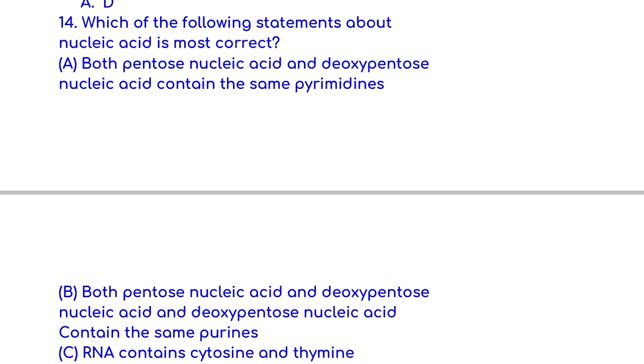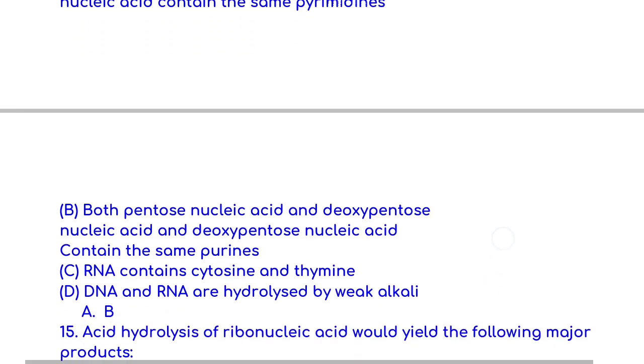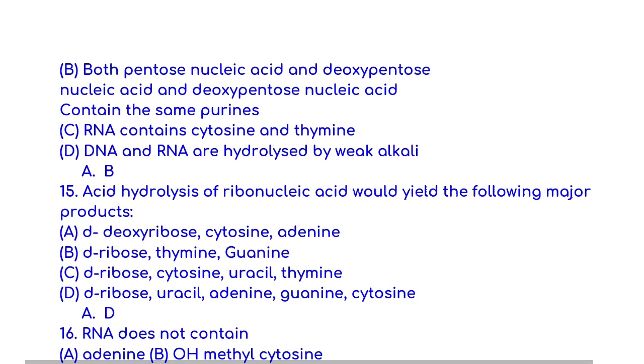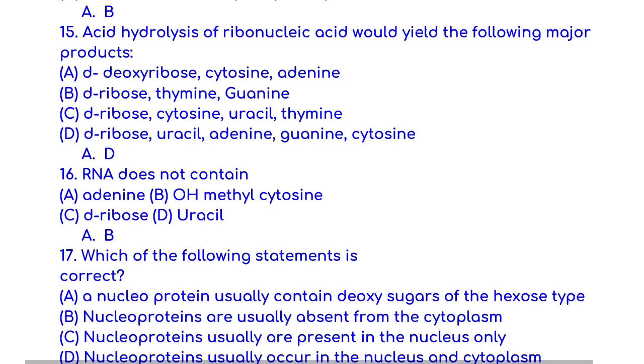Which of the following statements about nucleic acid is most correct? Both pentose nucleic acid and deoxypentose nucleic acid contain the same purines. Acid hydrolysis of ribonucleic acid would yield the following major products: D-ribose, uracil, adenine, guanine, cytosine.